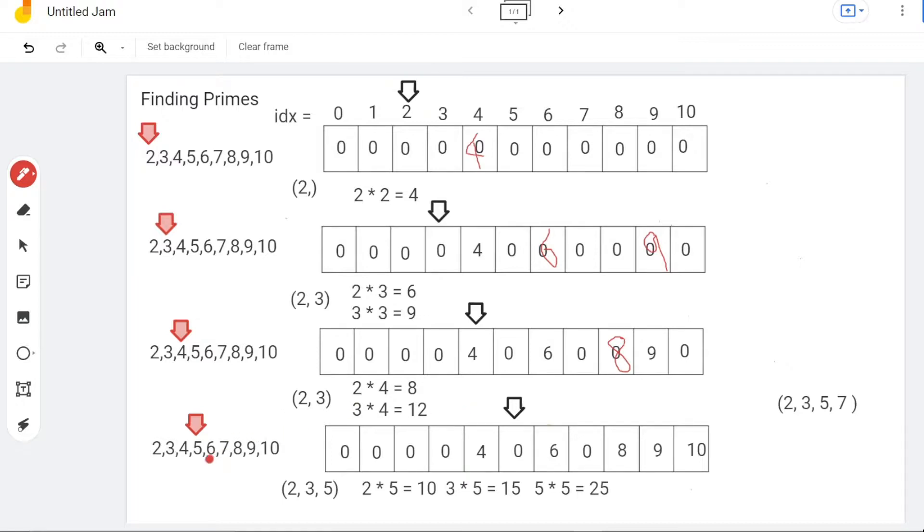So we move to the next number. We keep doing the above procedure until the end of the number, which is 10. Finally, we found the prime set is 2, 3, 5, 7.